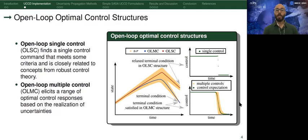On the other hand, we have open-loop multiple control structure that elicits a range of optimal control responses based on uncertainty realizations. One way to look at open-loop multiple control structure is to consider the closed form solution from a general UCCD formulation. And if we do that, we'll notice that the optimal solution would be a function of problem elements, such as design variables and parameters, and when they are uncertain, then for every realization of those uncertainties, we will expect to see a different and distinct optimal control response.